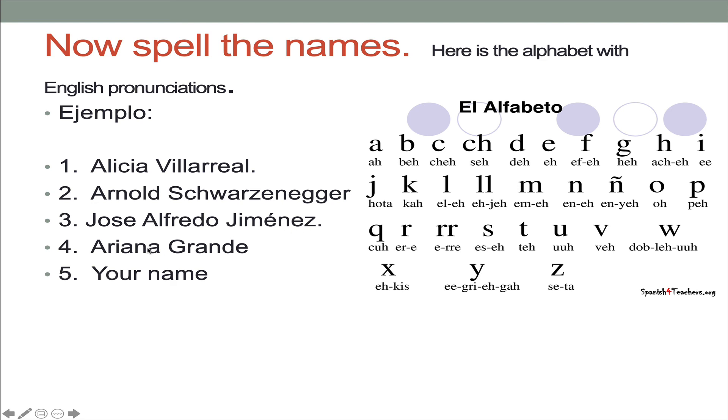José Alfredo Jiménez sería J, O, S, E, A, L, F, R, E, D, O. J, I, M, E, acento, N, E, Z.